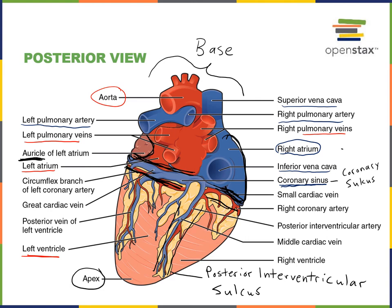The coronary sulcus is the groove running in between the atria and the ventricles that contains the coronary sinus, so it is also sometimes referred to as the atrioventricular groove or atrioventricular sulcus. The coronary sulcus and atrioventricular sulcus are synonyms, and they contain the coronary sinus, which functions to drain deoxygenated blood coming back from the heart into the right atrium.